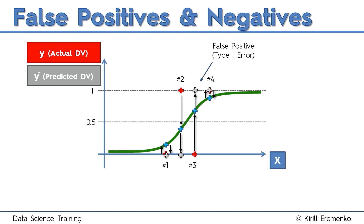These mistakes have specific names. The first mistake — observation three — is called a false positive, or a Type 1 error. It means we predicted a positive outcome but it was false: we predicted an effect that did not occur. The other mistake — observation two — is called a false negative, or a Type 2 error. We predicted there would be no effect, but the effect actually did occur. Our prediction was negative, but it was false.